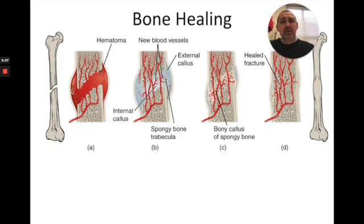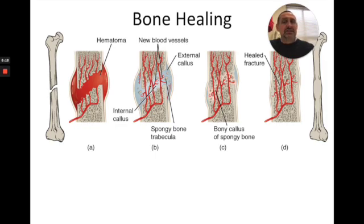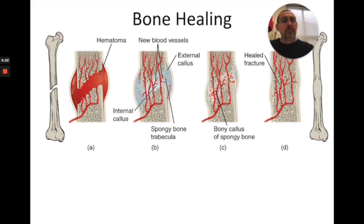Here's how bones heal. Whenever there's a break, the first thing that happens is a blood clot forms — that stops the bleeding, as there are blood vessels in bone. Next, a callus starts to form, replacing some of that blood clot with cartilage and spongy bone. Eventually it ossifies and heals as a strong bone again.